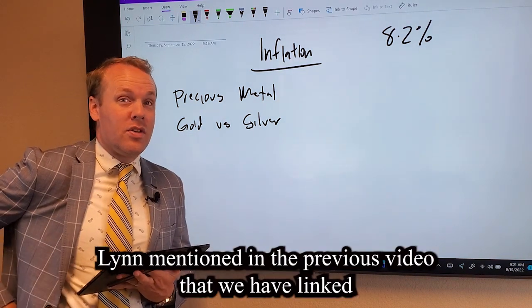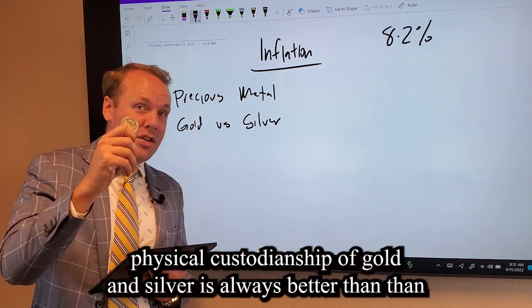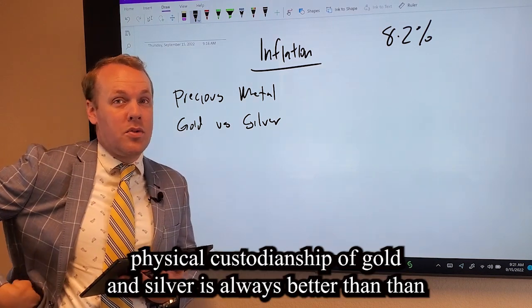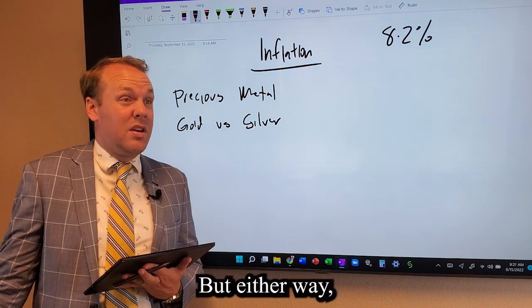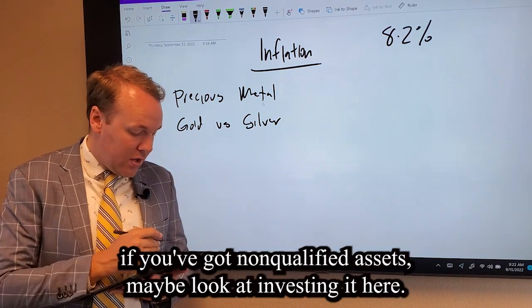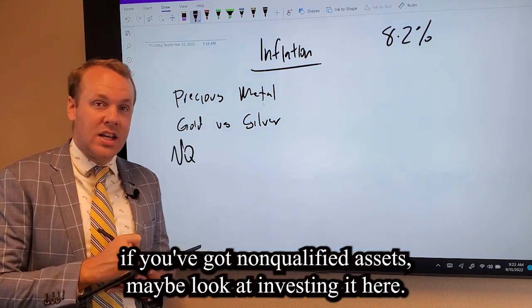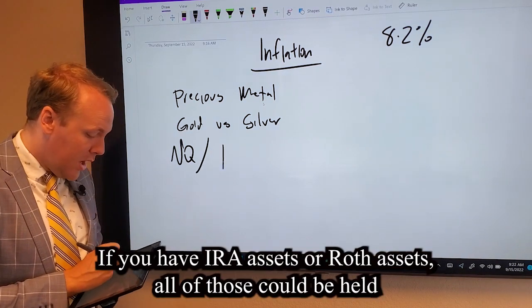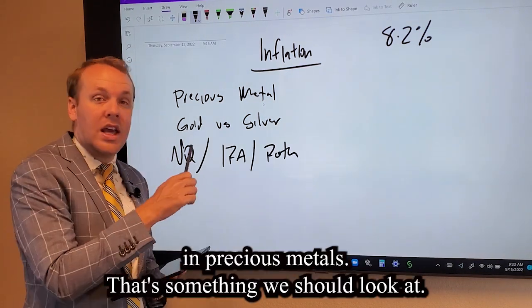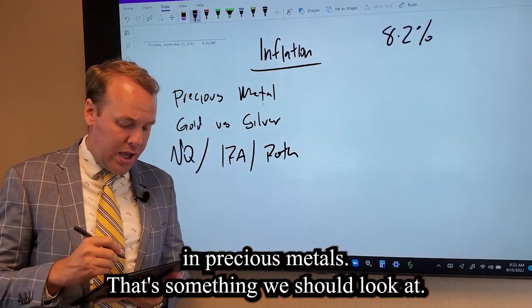Lynn mentioned in the previous video that we have linked, physical custodianship of gold and silver is always better than paper gold and silver. But either way, if you've got non-qualified assets, maybe look at investing it here. If you have IRA assets or Roth assets, all of those can be held in precious metals. That's something we should look at.